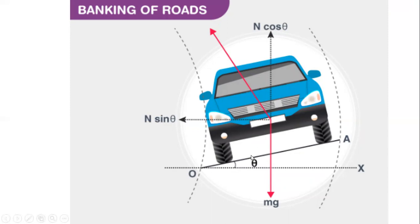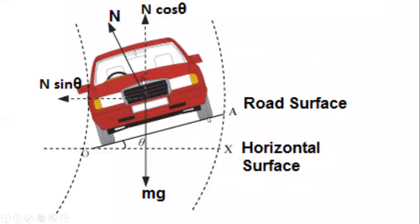Observing the diagram: the weight of the car is mg, the banking angle of the road is theta, and the normal force is N. We resolve N into two components: N·cos θ (vertical) and N·sin θ (horizontal). Here ux is the horizontal surface and ua is the road surface.